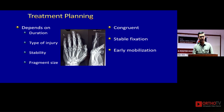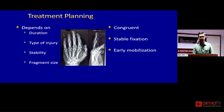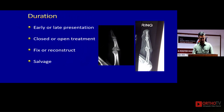For treatment planning, four things matter: the duration at which the patient presents, the type of injury (one of the five types shown earlier), whether the joint is stable after reduction or without reduction, and the fragment size if there is a fracture dislocation. The aim of all treatment is a congruent joint — no V sign — with stable fixation so that you can start moving the joint early.